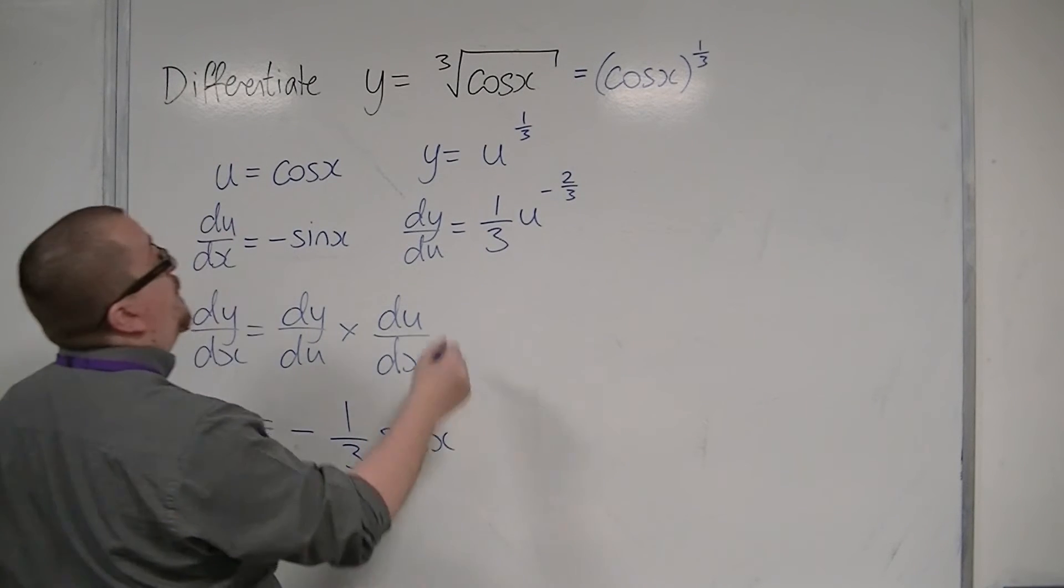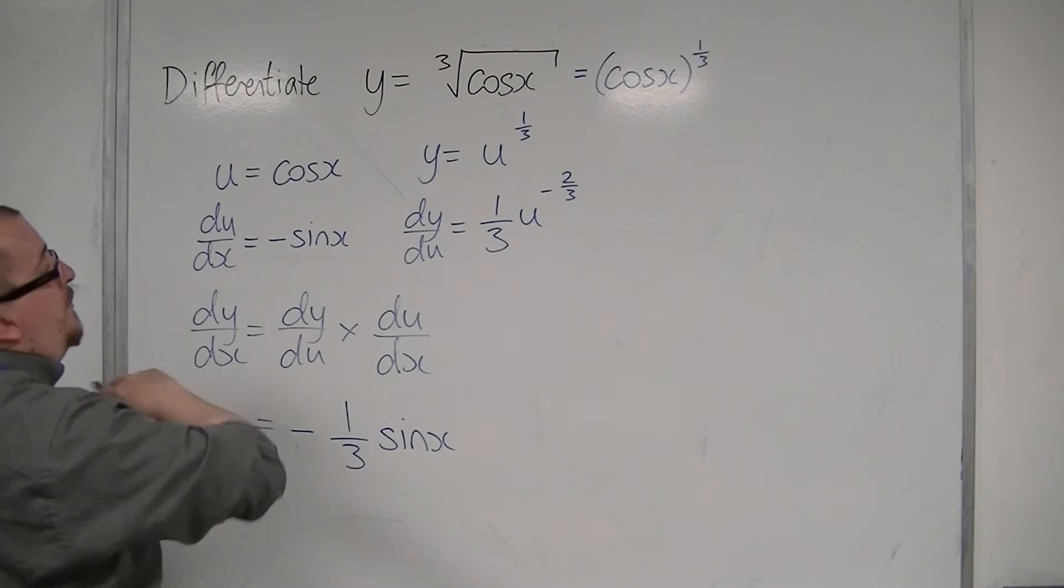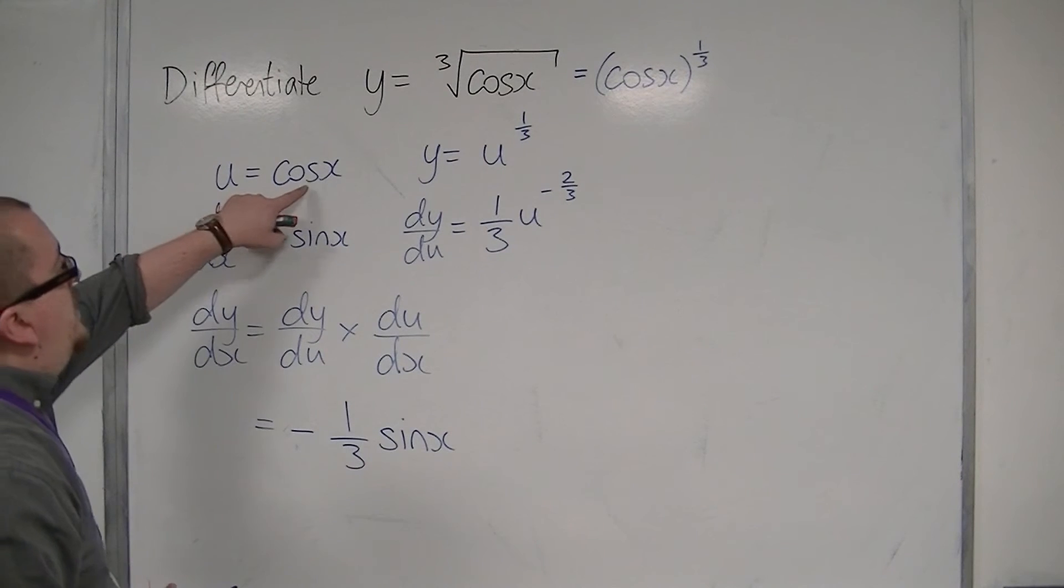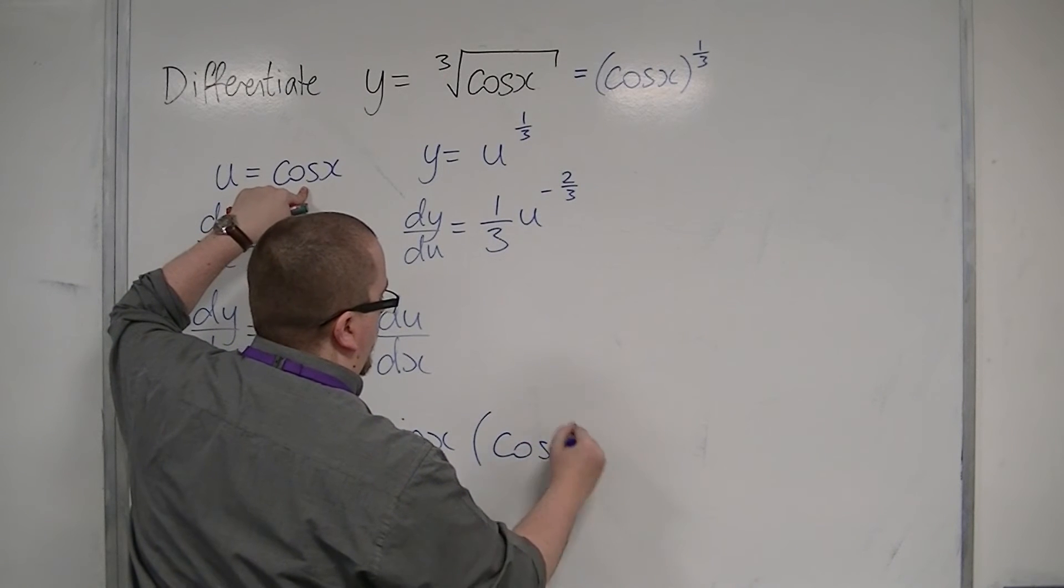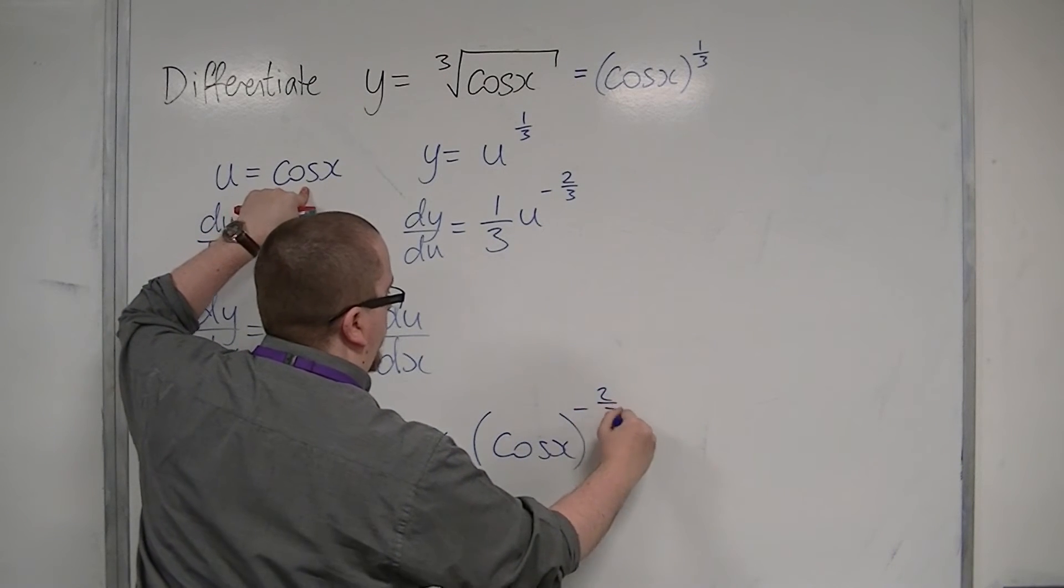and then we've got the u to the minus two thirds. So u was cos x, so we have cos x to the minus two thirds.